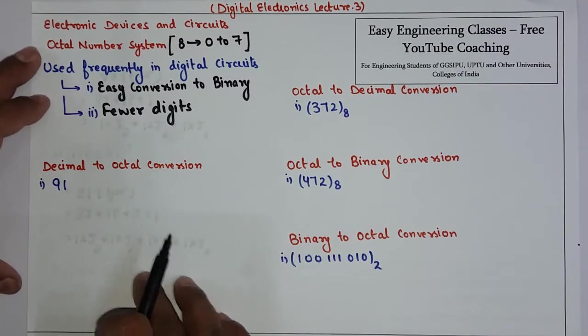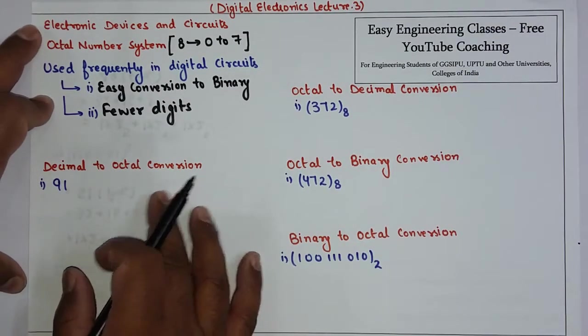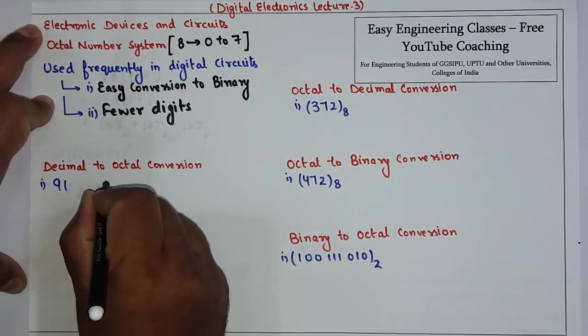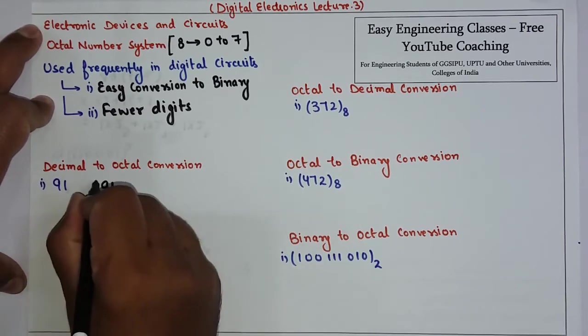First, let's see how decimal to octal conversion works. We use the same division procedure as in the binary case.